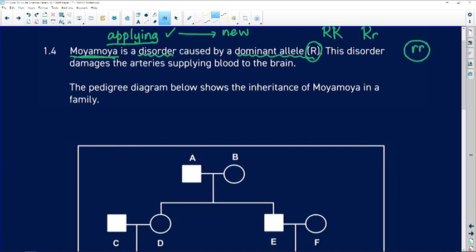And what does this disorder do? It damages the artery supplying blood to the brain. So it sounds like it is a really important disorder that is going to bring about the death of an organism. So we would say that this is now a lethal mutation.